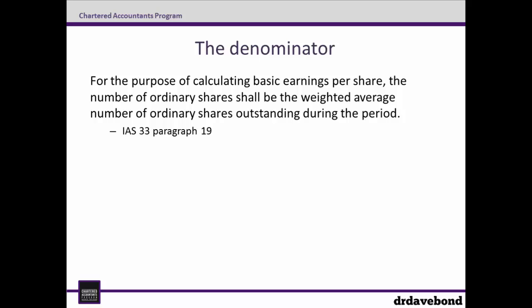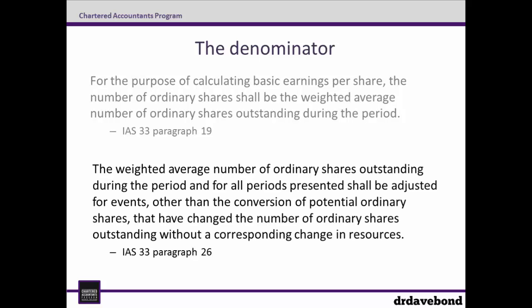Now that we've dealt with the numerator, it's time to move below the line and calculate the denominator. Paragraph 10 tells us that the number of ordinary shares shall be the weighted average number of ordinary shares outstanding during the period. But depending on how the shares were issued, it's not quite as straightforward as that, because paragraph 26 requires adjustments when there are events other than the conversion of potential ordinary shares that have changed the number of ordinary shares outstanding without a corresponding change in resources.